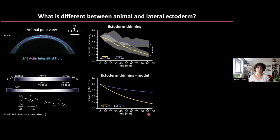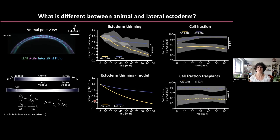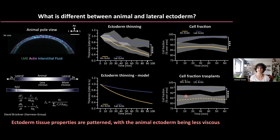Given these results, we went back to the embryo to look at the cellular level for anything correlating with this difference in thickness and possible viscosity. What we found is that the lateral ectoderm has a higher cell fraction than the animal ectoderm. This was also true in transplanted ectoderm. From previous work, we knew that cell fraction correlates with viscosity — overall suggesting that ectoderm tissue properties are patterned along the animal-vegetal axis, with the animal ectoderm being possibly less viscous.